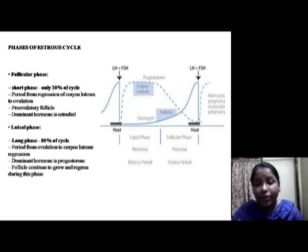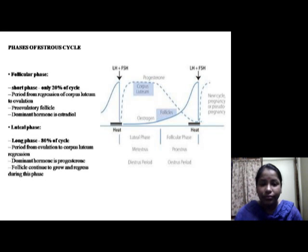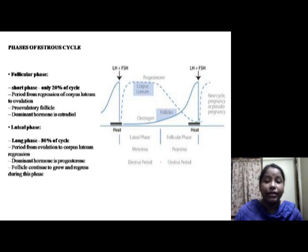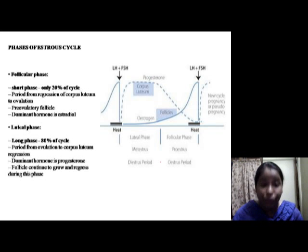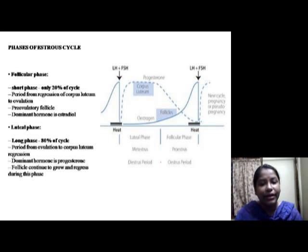The follicular phase begins during luteolysis and ends at ovulation. During this phase, follicles are growing and developing, and the dominant hormone is estrogen, produced by the growing follicles.